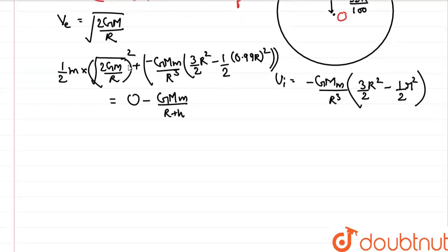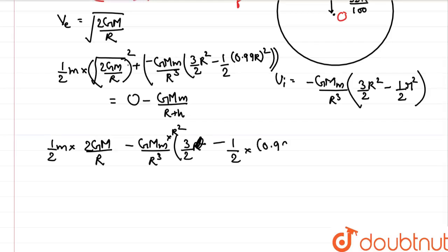Now simplifying things. This is half of small m into 2G capital M by r minus Gm upon r cube 3 by 2 r square. We can take r square also common. R square comes out to be common minus half into 0.99 whole square minus Gm by r plus h.